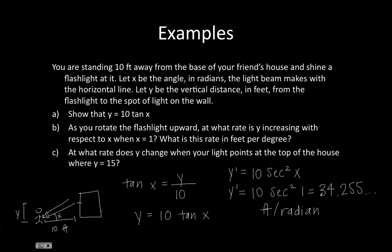So in terms of feet per degree, we would do 34.255 feet per radian. And we know that pi radians is equal to 180 degrees.